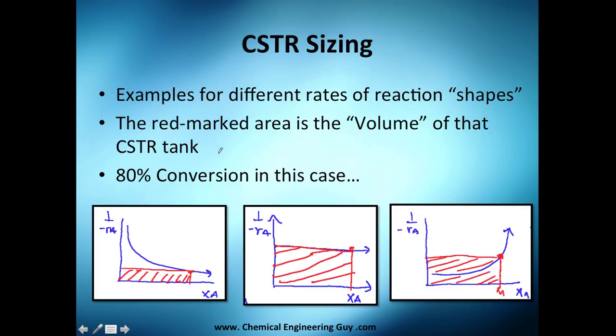I'm going to show you some examples for these different shapes of rate of reaction. The red marked area or these lines is the volume of that CSTR tank or reactor. I use 80% conversion in all cases. This line right here is the rate of reaction. For example, I got this shape, I choose 80%, stick it here and see where I intersect with my rate of reaction, then make a horizontal line and I will get this shaded area.